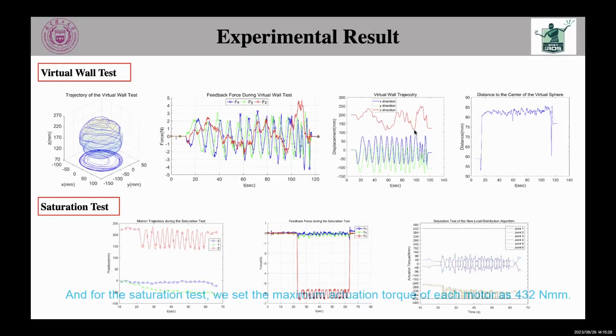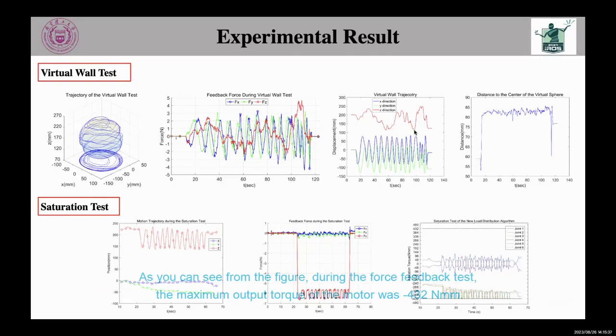And for the saturation test, we set the maximum actuation torque of each motor as 432 millinewton-meters. As you can see from the figure, during the force feedback test, the maximum output torque of the motor was minus 432 millinewton-meters.